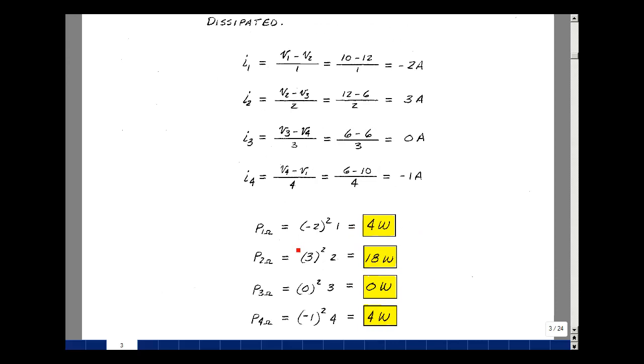I can take I squared times R. Minus 2 squared times 1 is 4 watts. For the 2-ohm resistor, we had 3 amps, so 3 squared times 2 is 18 watts. For resistor 3, we had zero current, so 0 squared times 3 is 0 watts. And then lastly, for the 4-ohm resistor, we found it was minus 1 amp, minus 1 squared times 4 is 4 watts.